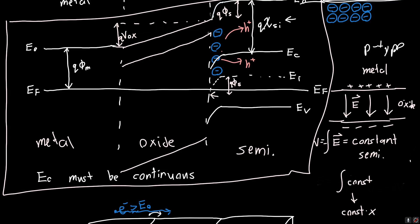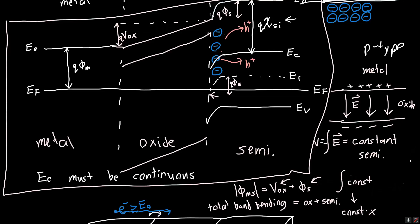All we need to do is relate the quantities we know. The work function phi ms — whose magnitude is the total amount of band bending — equals the voltage across the oxide plus the band bending within the semiconductor. In the next video, we'll figure out exactly how much band bending occurs in the oxide versus the semiconductor, and show that this is directly related to calculating the threshold voltage of a MOSFET.